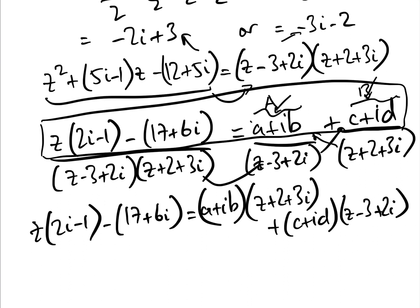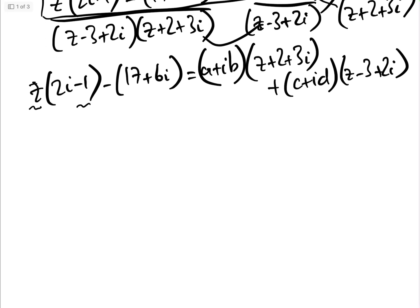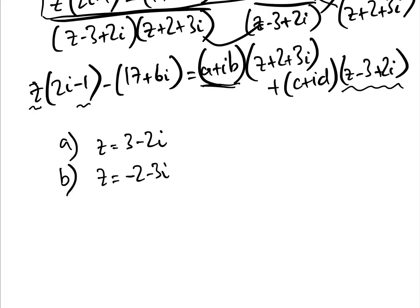We have four unknowns: A, B, C, and D. There are two basic ways. First, we could compare the reals and imaginaries of the Z and non-Z terms, giving four equations and four unknowns. Probably slightly easier is to let Z equal 3 minus 2I first — this makes the second bracket zero, leaving an equation only in A and B — then let Z equal minus 2 minus 3I, making the first bracket zero and leaving an equation in C and D. This gives two sets of two simultaneous equations rather than one set of four.